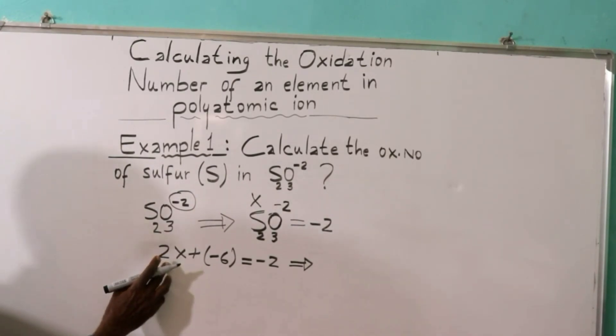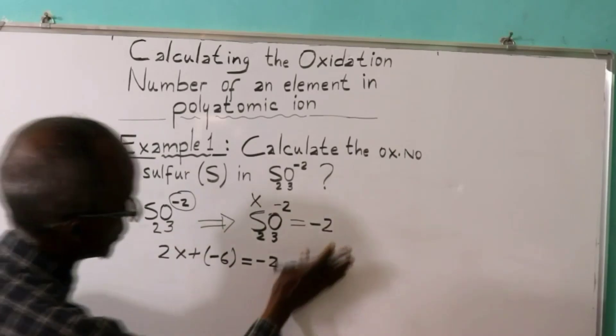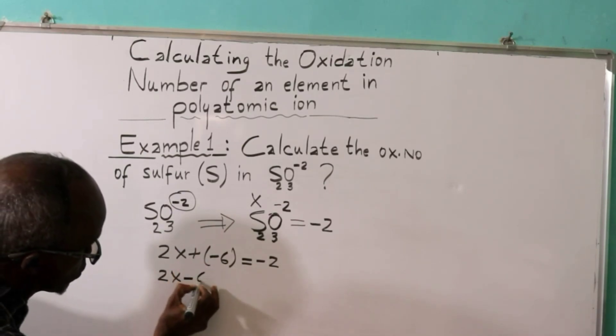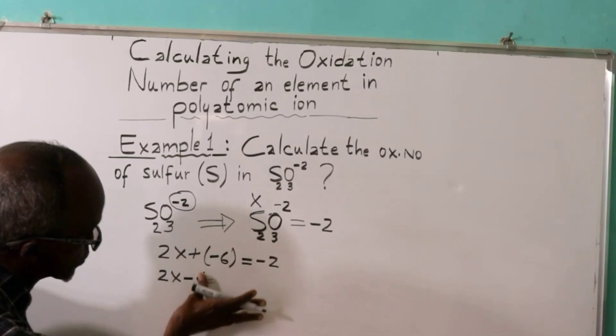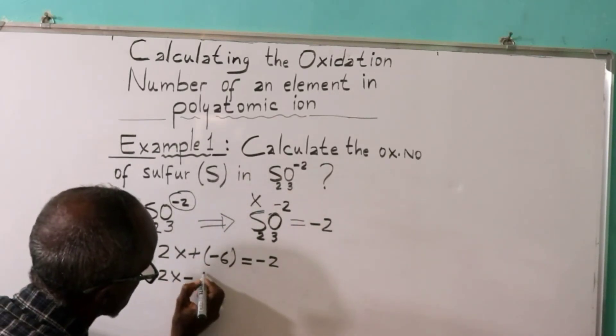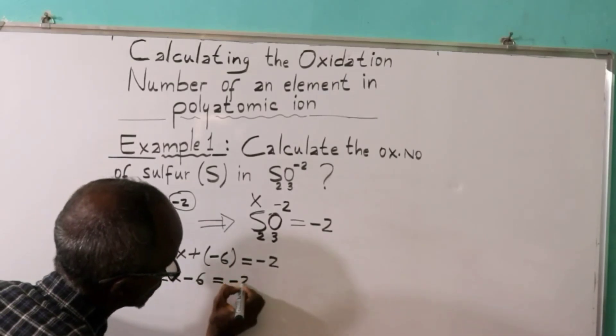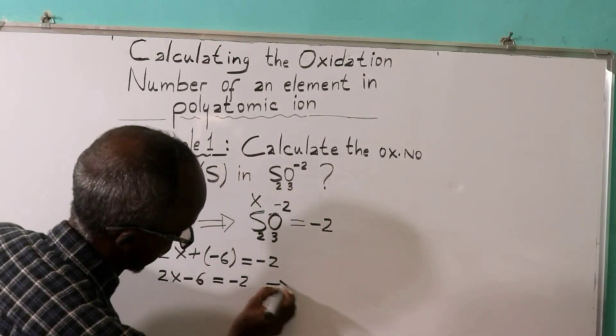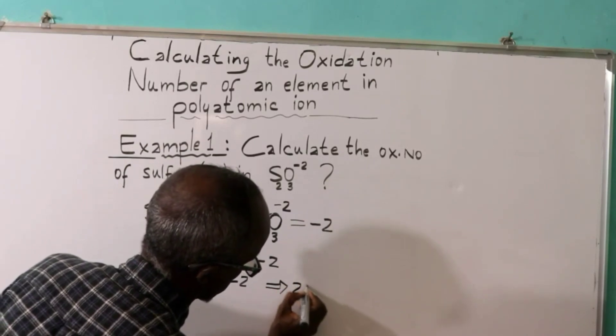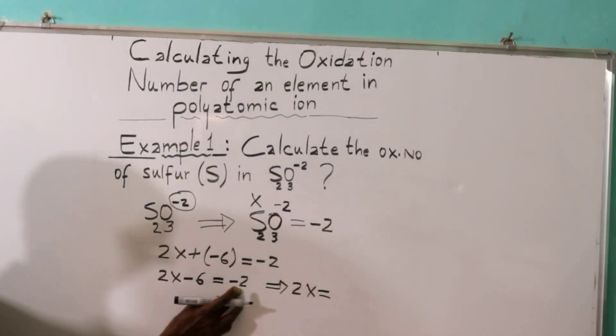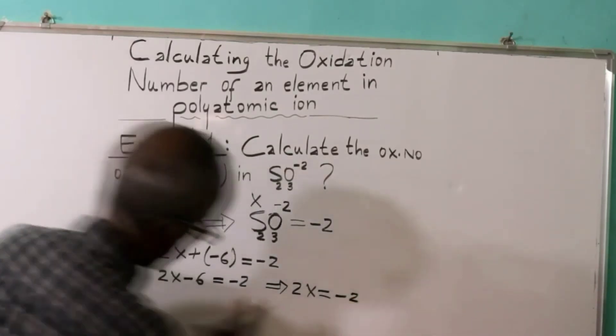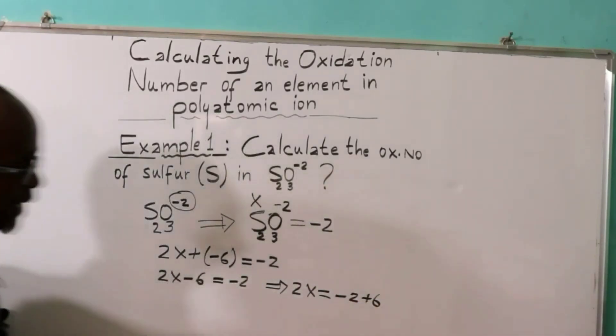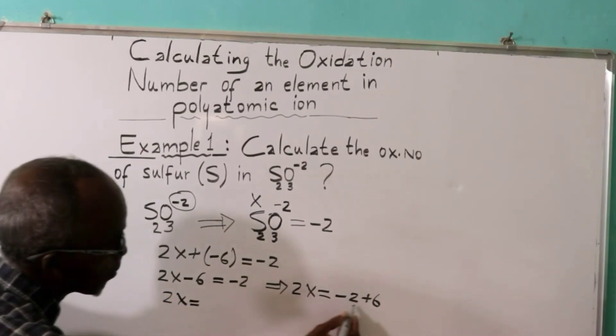Two x minus six is equal minus two. Minus six and minus two balance. Two x is equal to plus four.